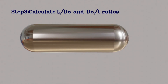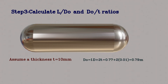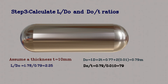In step 3, we calculate the L/D0 and D0/T ratios. Assuming a thickness T of 10 mm, we calculate D0 = inside diameter + 2t = 0.79 m. From this, L/D0 = 2.25 and D0/T = 79. These values are needed to find factors A and B in the next steps of calculation.